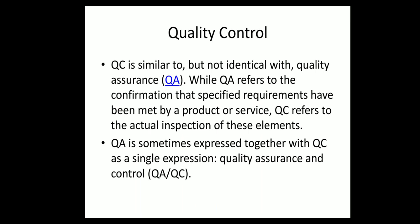QC is similar to but not identical with quality assurance. While QA refers to the confirmation that specified requirements have been met by a product or service, QC refers to the actual inspection of these elements. QA is performed by the customer, who confirms that requirements are being met and gives a green signal to the machinery people, whereas QC is performed at the start of the machinery.